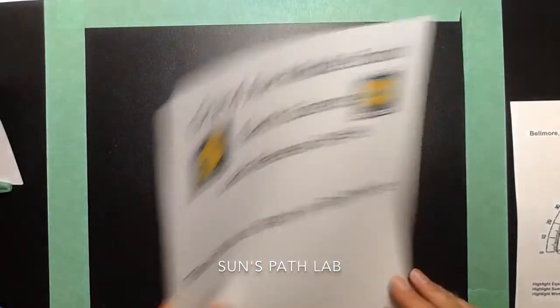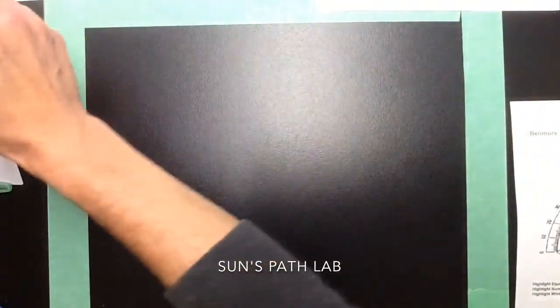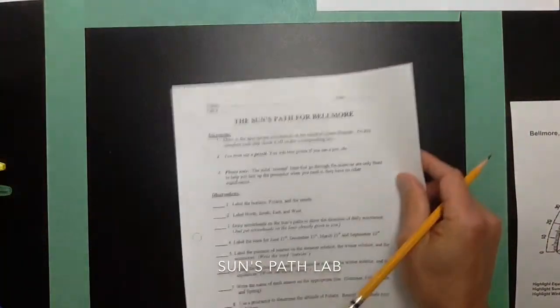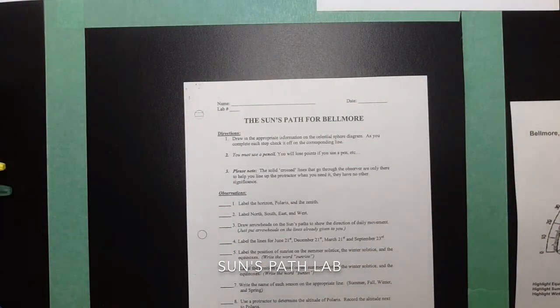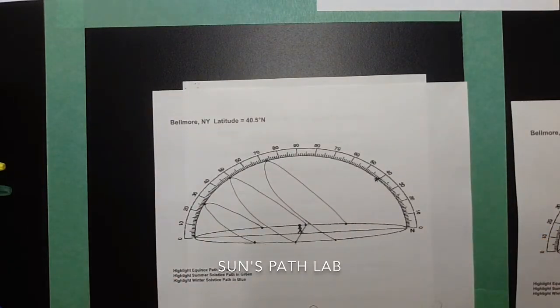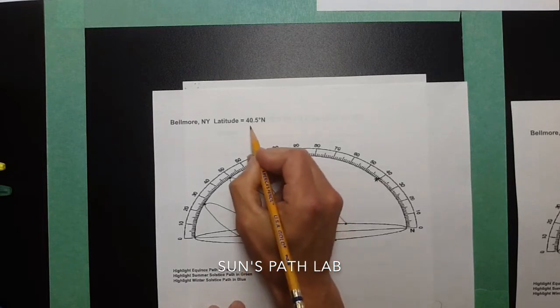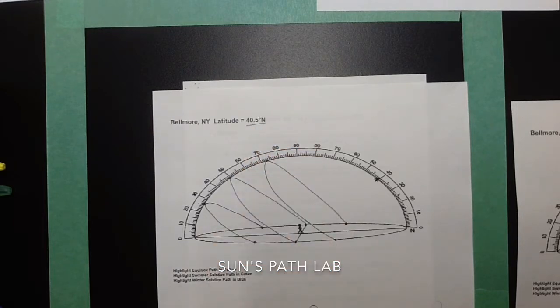Alright, so there are two pages on this lab. The first page has the written directions. The second page shows you a celestial sphere model for the sky. It's showing you the path of the sun for each of the seasonal dates. One important thing to consider is that it's giving you the latitude for Bellmore, which we're going to use as 40.5 degrees north. It's actually around 40 degrees 40 minutes north latitude, but we'll just round it out to 40.5 degrees north latitude.